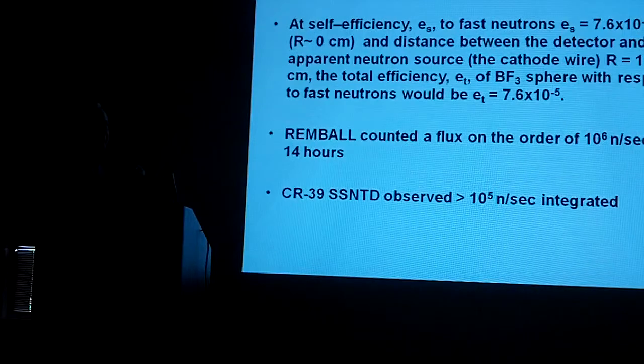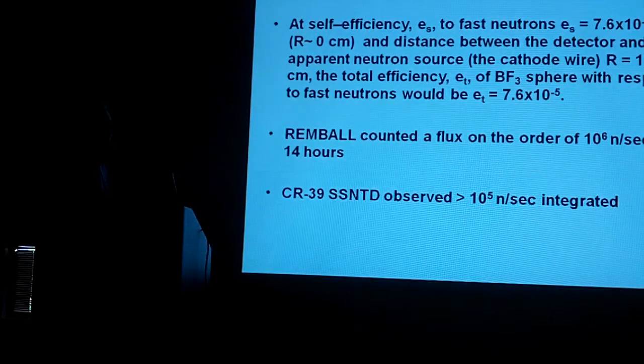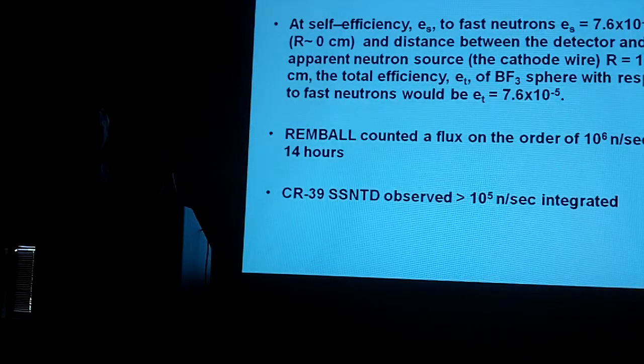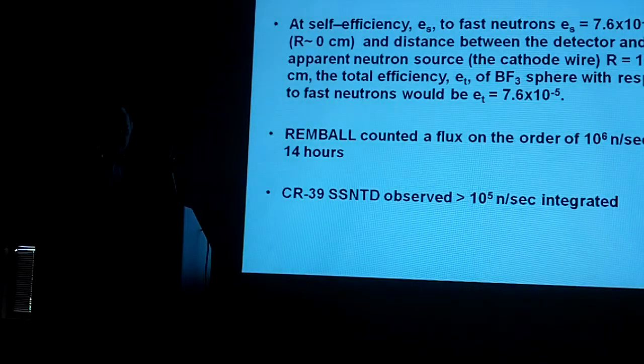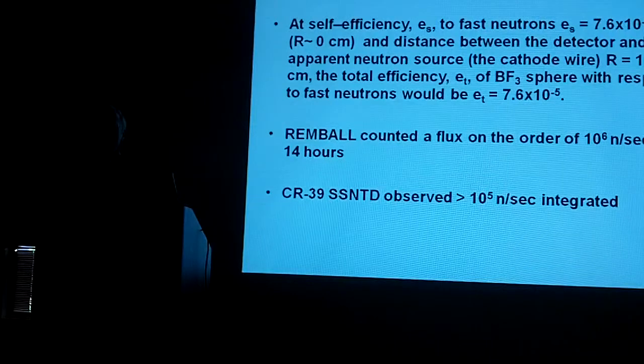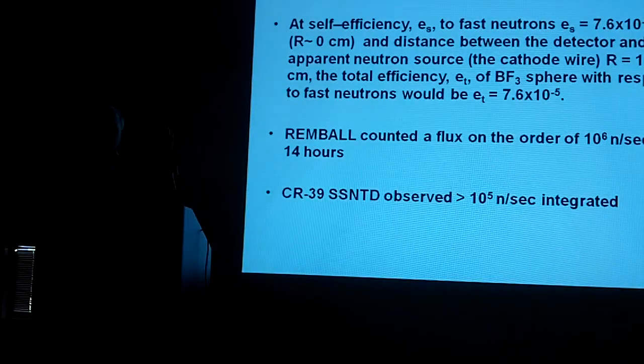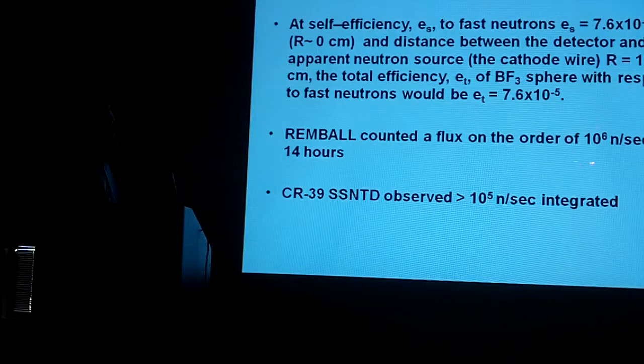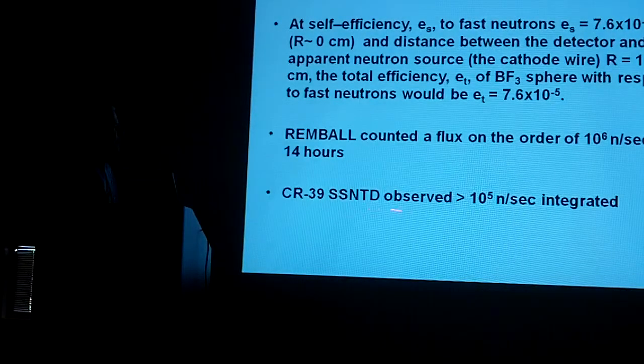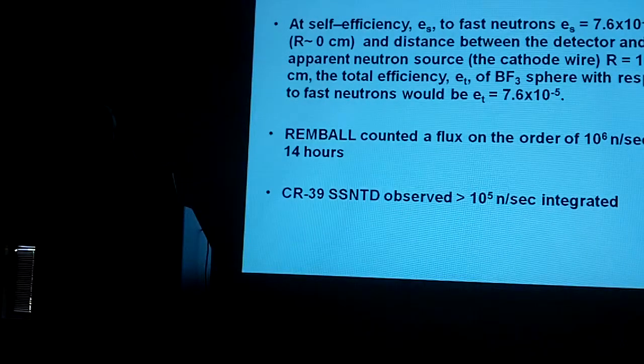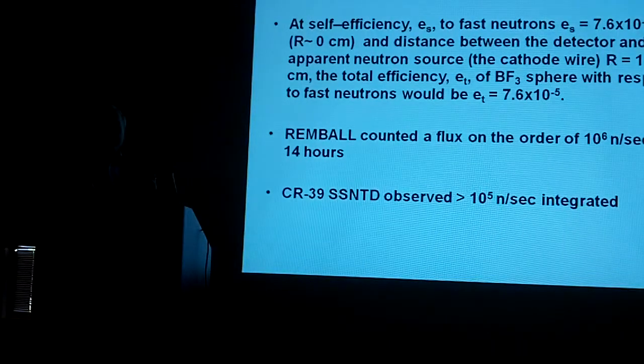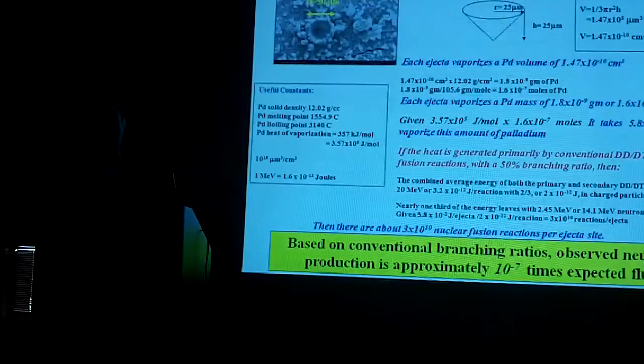We started looking at the flux that it observed and went through a bunch of calculations. The Rimnal, when you look at its efficiency and how many neutrons were produced, and how much of the surface it would have seen from the, if you assume the neutrons were being emitted over 360 degrees spherically, we estimated that we were seeing about 10 to the sixth neutrons per second for that 14 hours. We have observed in our CR-39, we've done the same thing on the order of 10 to the fifth neutrons per second integrated. And so, again, for physics terms, we're pretty close.